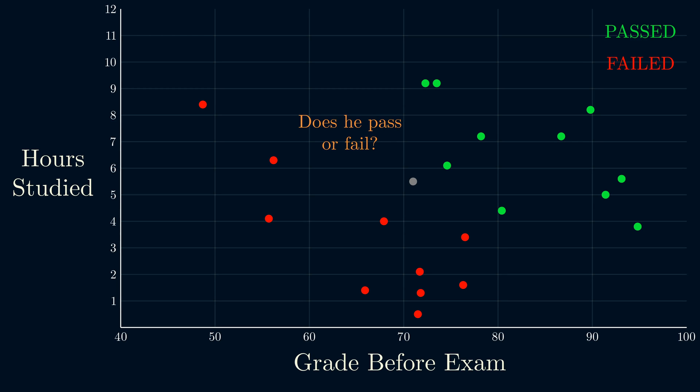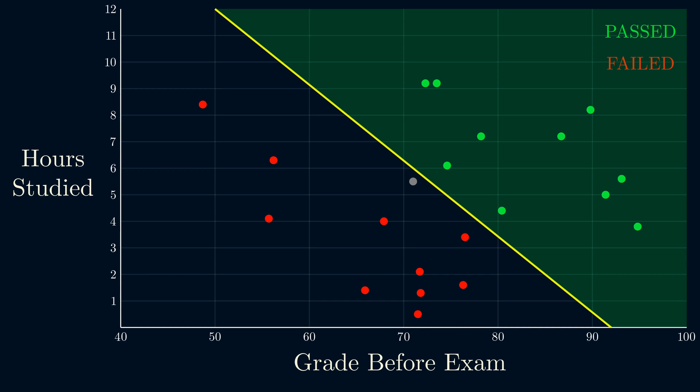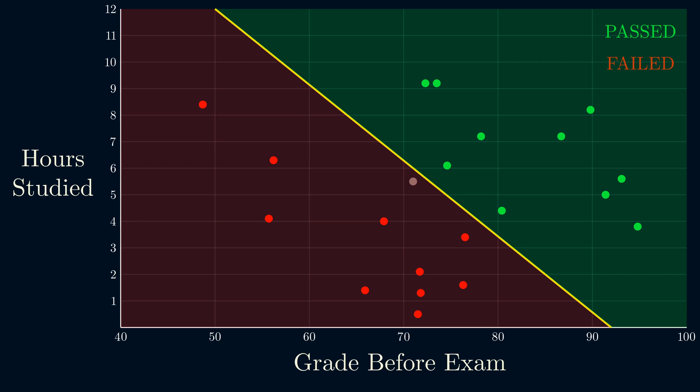Looking at this graph, perhaps a natural idea is to try to draw a line that separates the two classes. Then if a student falls on one side of the line, we predict he passes, otherwise we predict he fails.